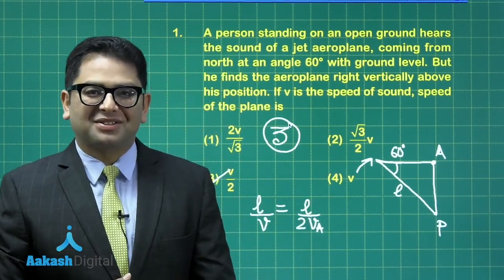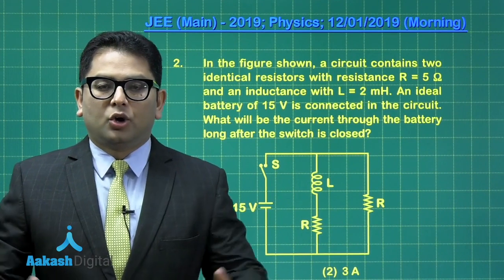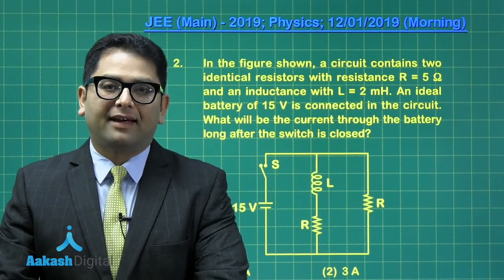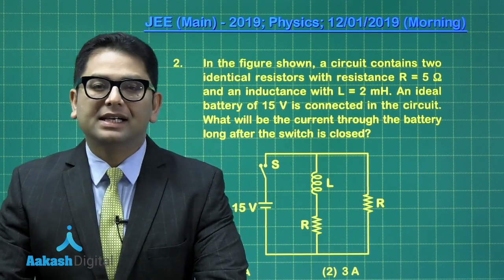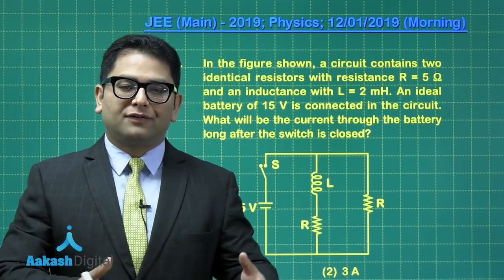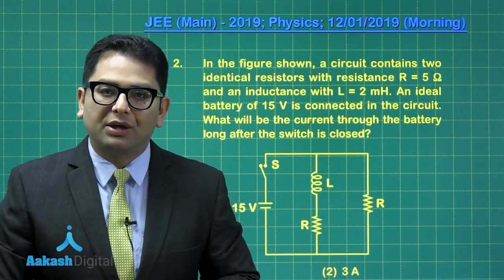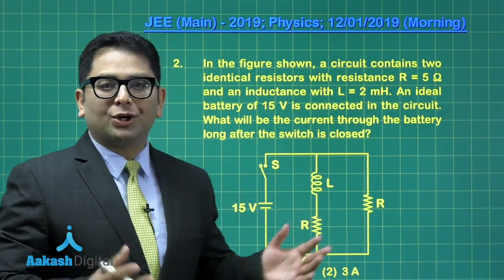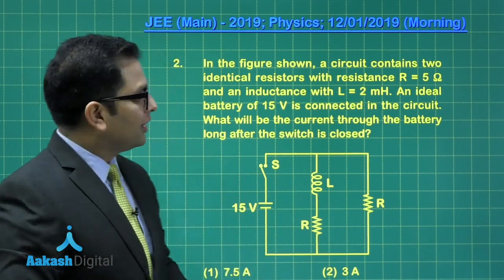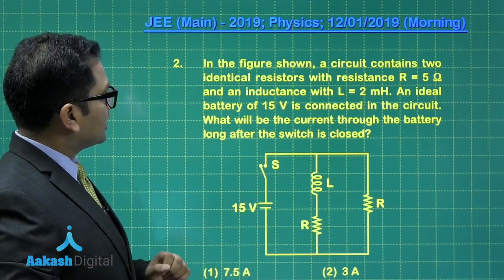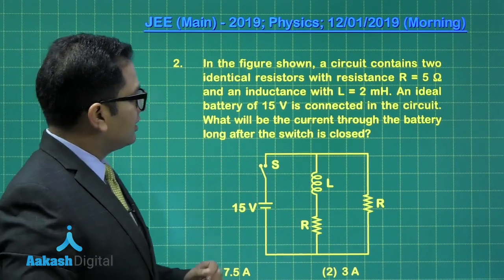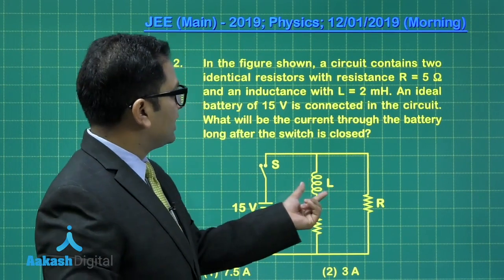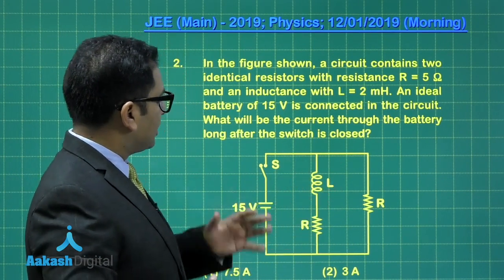Now it's time we move to the second question. Question number two is another straightforward question from RL circuit, and this question in fact tests your knowledge of boundary condition, the condition at t equals to 0, the condition at t equals to infinity.